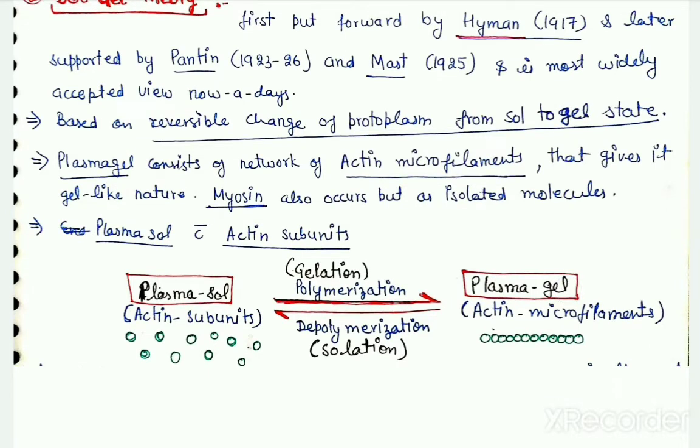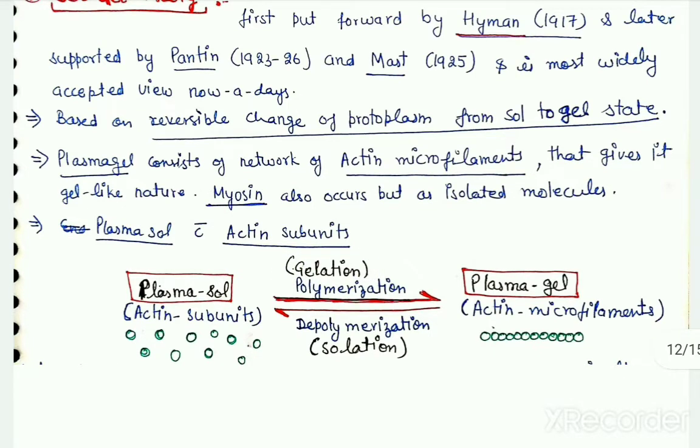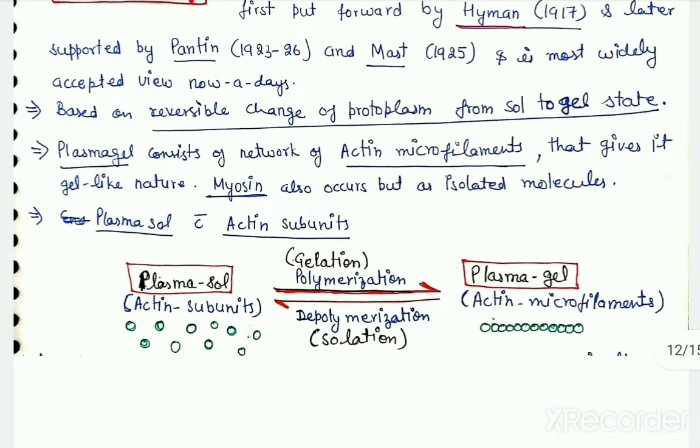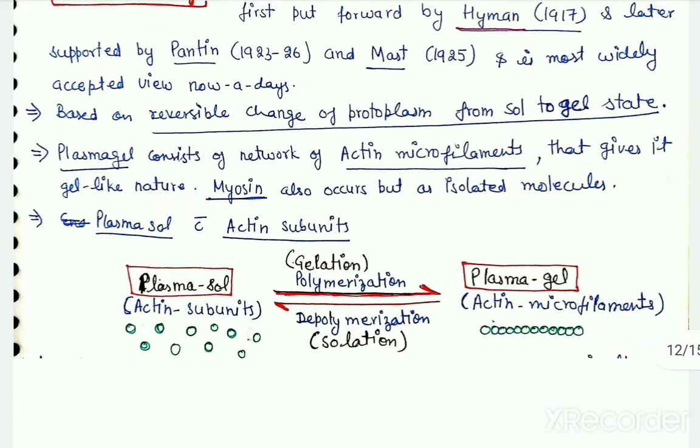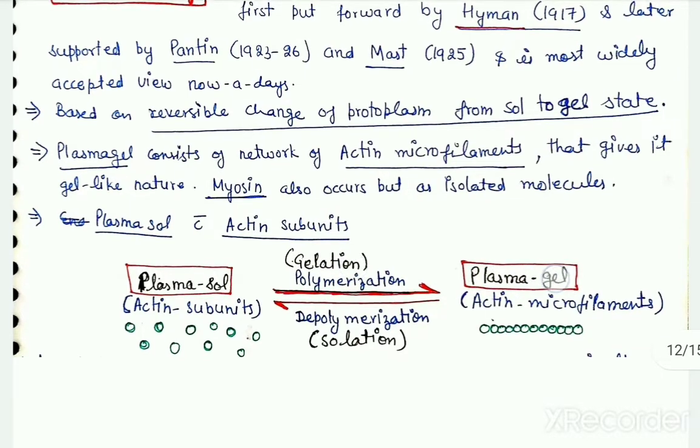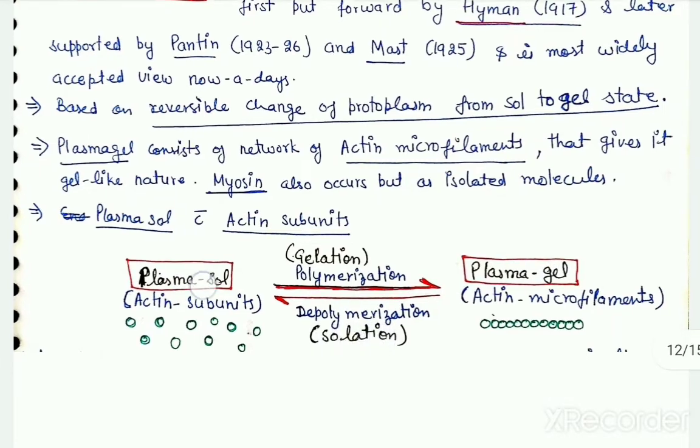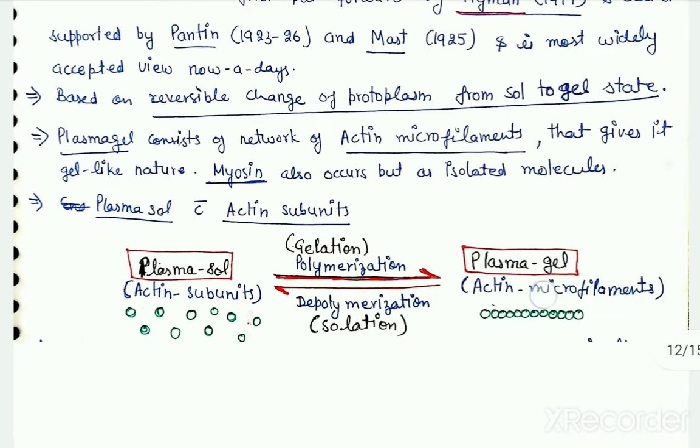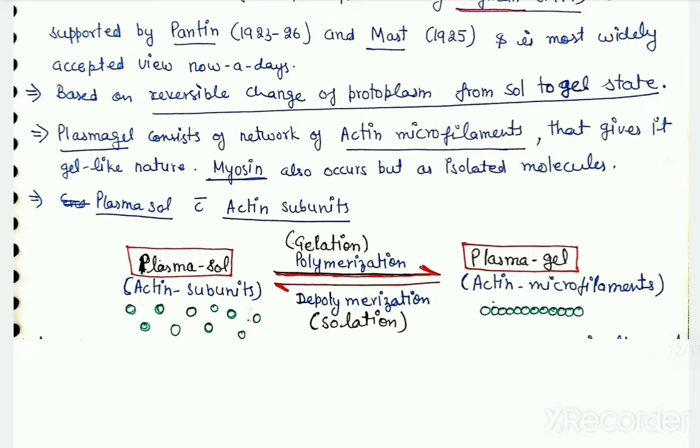There are two important terms here: one is gelation and the other is solation. Gelation means conversion of plasma sol by the process of polymerization into plasma gel. Gelation is the formation of plasma gel. Vice versa, solation is the formation of plasma sol by depolymerization of the plasma gel or these actin microfilaments.